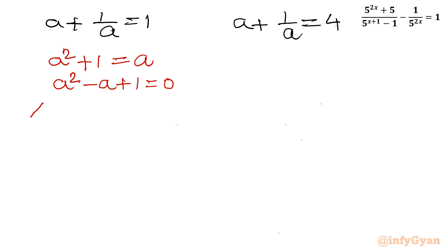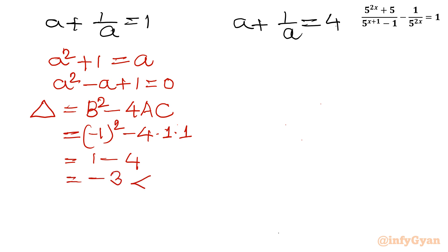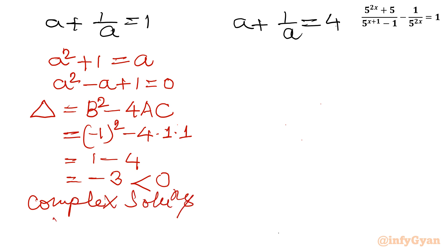Checking the discriminant of the first equation: delta equals b squared minus 4ac equals (negative 1) squared minus 4 times 1 times 1 equals 1 minus 4, which is negative 3. Because the discriminant is negative, this equation generates only complex solutions. So we can reject this case.